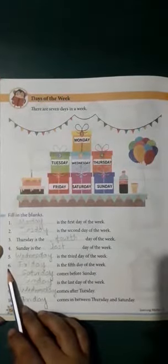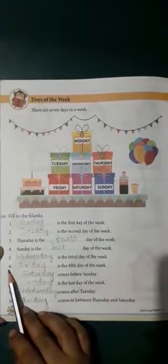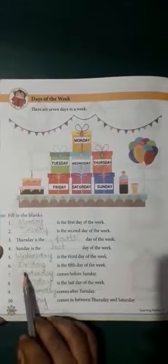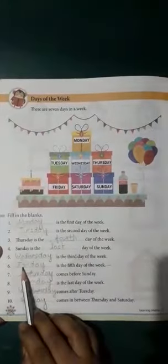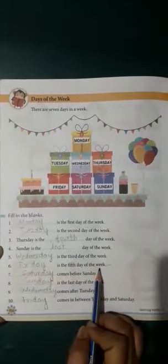Now the next question is six: dash is the fifth day of the week. One, two, three, four, five — fifth day is Friday. Thus we write here Friday is the fifth day of the week.